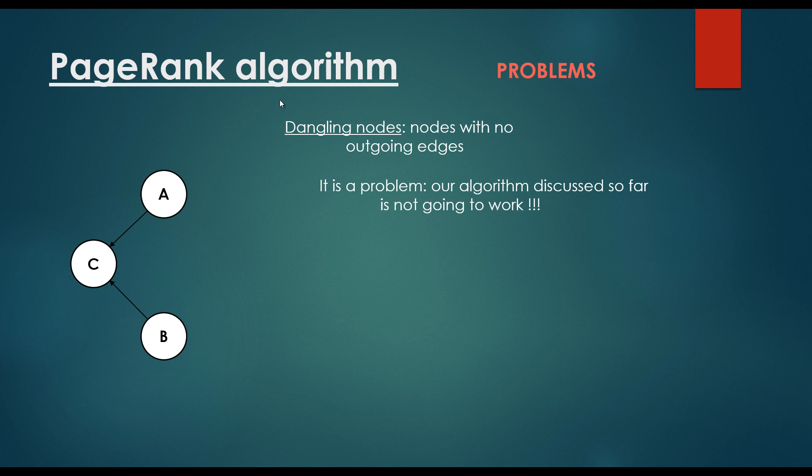For example, when we have to handle dangling nodes. Dangling nodes are nodes with no outgoing edges. Let's suppose the situation that our World Wide Web consists of 3 web pages: A, B and C. A is pointing to website C, B is pointing to website C. Let's calculate the page ranks for the websites.